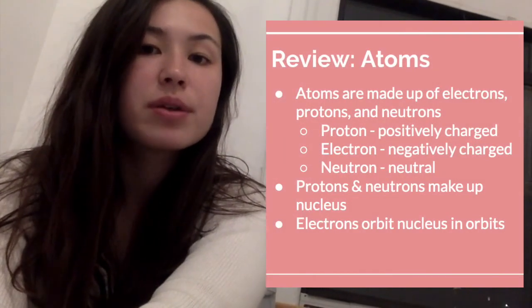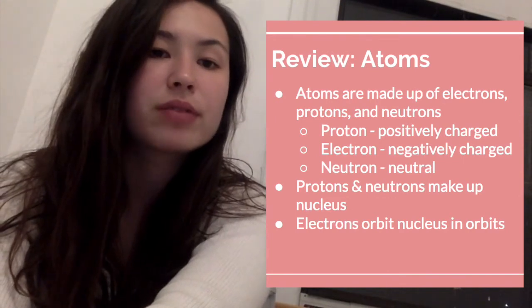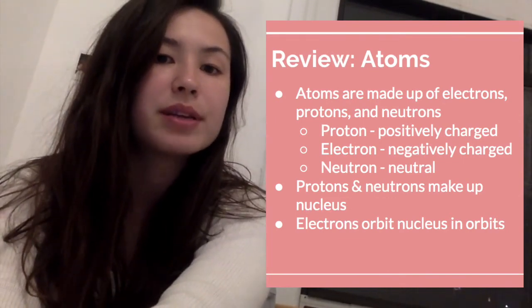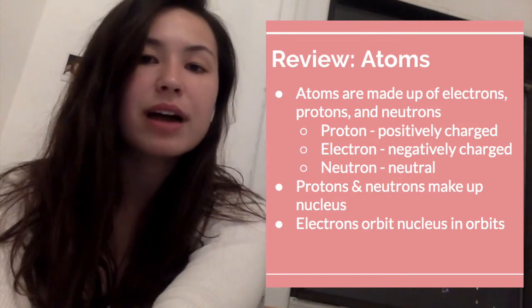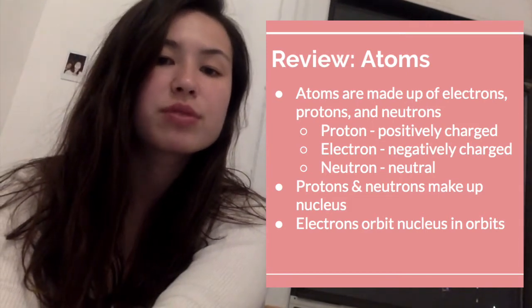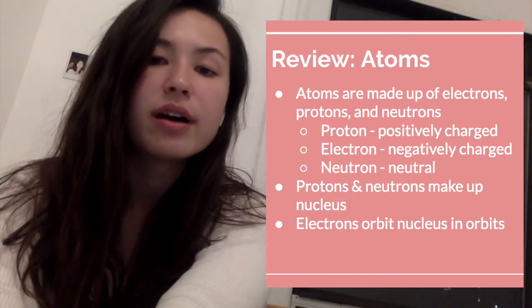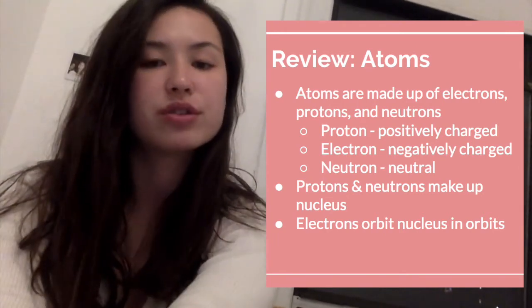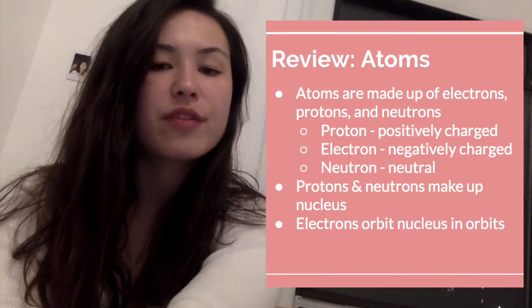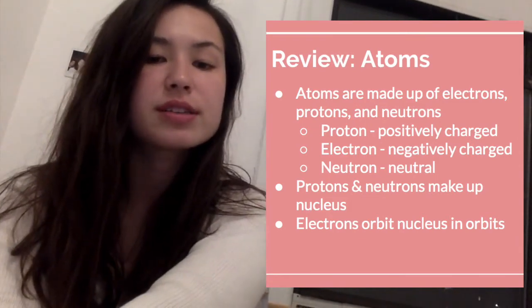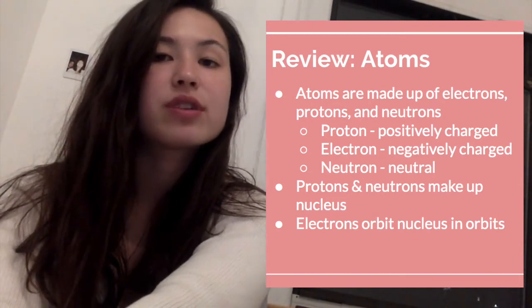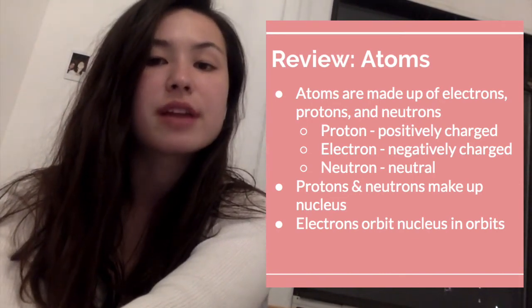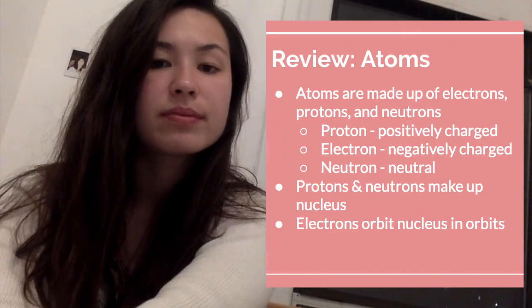You should remember this from chemistry, but we're just going to do some quick review about what exactly an atom is and what are the parts of an atom. Atoms are made up of electrons, protons, and neutrons. Protons are positively charged, electrons are negatively charged, and neutrons are neutral. You have protons and neutrons in the nucleus, and then electrons orbiting outside of the nucleus.